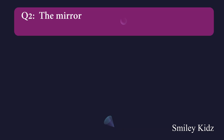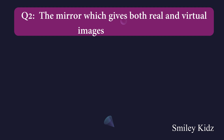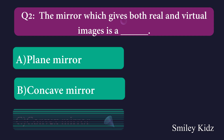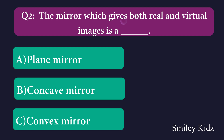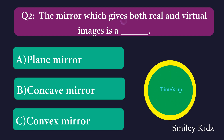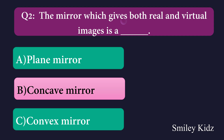Question number two: The mirror which gives both real and virtual images is a dash. Option A: plane mirror, Option B: concave mirror, Option C: convex mirror. The right answer is concave mirror. The mirror which gives both real and virtual images is a concave mirror.